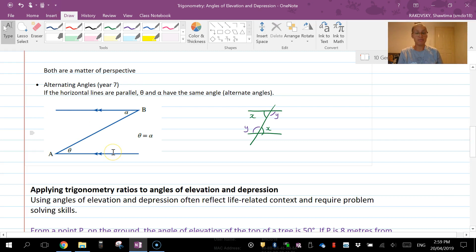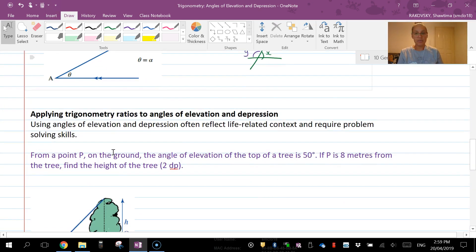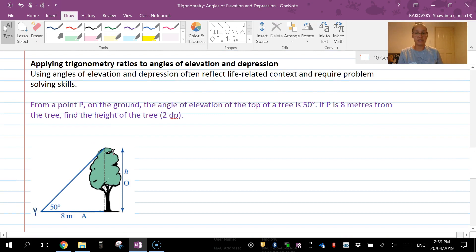Applying trigonometry ratios to angles of elevation and depression, generally the first thing you want to do is this is your plan of attack or your strategies in solving these problems. So you always want to try and, if a diagram is not given to you, draw a diagram.